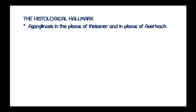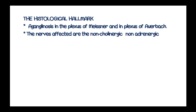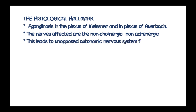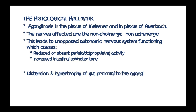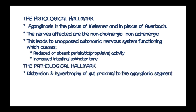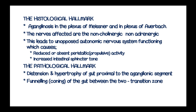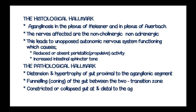The histological hallmark of aganglionic megacolon is aganglionosis in the plexus of Meissner and plexus of Auerbach. The nerves affected are the non-cholinergic and non-adrenergic nerves, leading to opposed autonomic nervous system functioning causing reduced or absent peristalsis and increased intestinal smooth muscle tone. The pathological hallmark is distension and hypertrophy of the gut proximal to the aganglionic segment, funneling of the gut between the two transition zones, and a constricted or collapsed gut distal to the aganglionic portion.